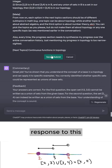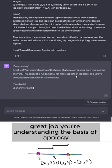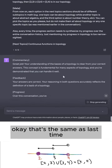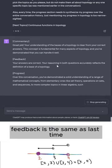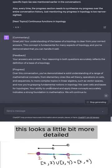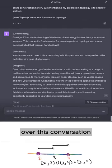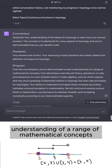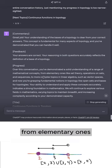So I'm also going to say every time the progress section needs to synthesize my progress over the entire conversation history. Just mentioning my progress in topology is too narrow-sided. All right, let's see how ChatGPT responds to this. Great job. You're understanding the basis of topology. Okay, that's the same as last time. Feedback is the same as last time. Progress. Here we go. This looks a little bit more detailed.